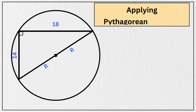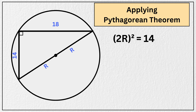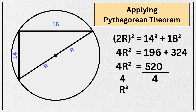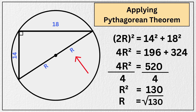Now using the Pythagorean theorem, we get (2r)² equals 14² plus 18². That gives us 4r² equals 196 plus 324, which is 520. Dividing both sides by 4, we get r² equals 130. Thus, the radius r is the square root of 130, which is approximately 11.4 units. And that's our answer.